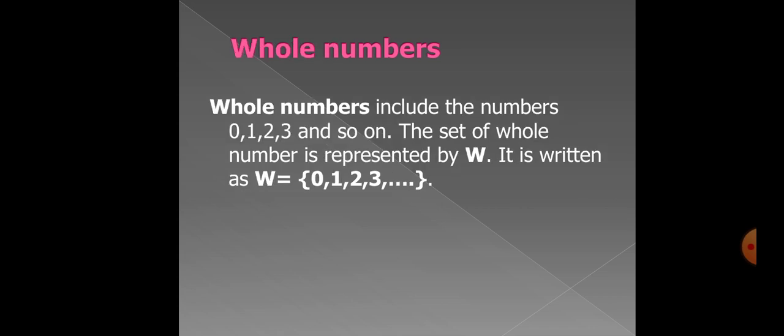So next definition is whole number. Whole number includes a number 0, 1, 2, 3 and so on. The set of whole number is represented by W. It is written as W equal to curly bracket 0, 1, 2, 3 and so on, curly bracket close.